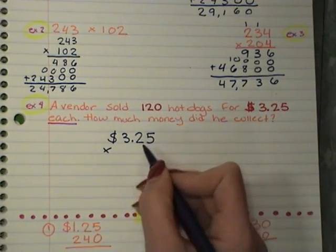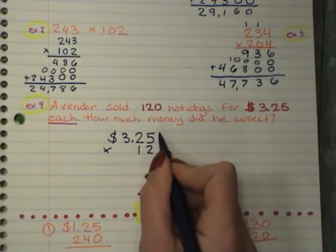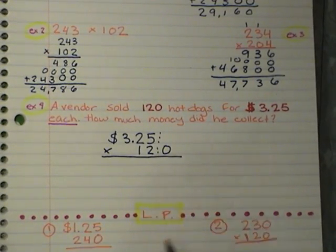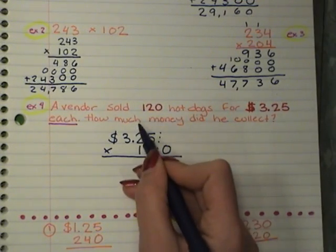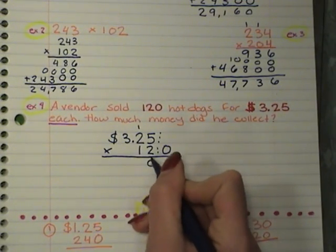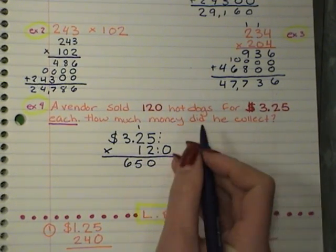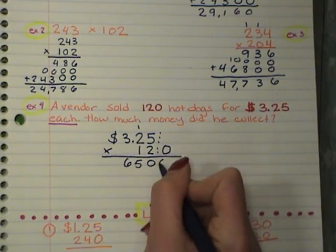When I see a 0 on the end, I know I can kind of move it over and make my problem easier. But just remember that you offset it. So $3.25, okay, times, I'm going to put my 1, 2, and I'm going to offset my 0 here. Okay, 2 times 5, 10. 2 times 2 is 4, plus 1, 5. 2 times 3 is 6.